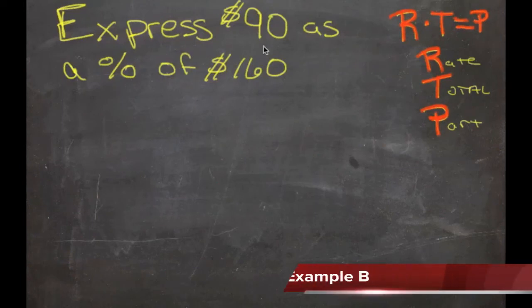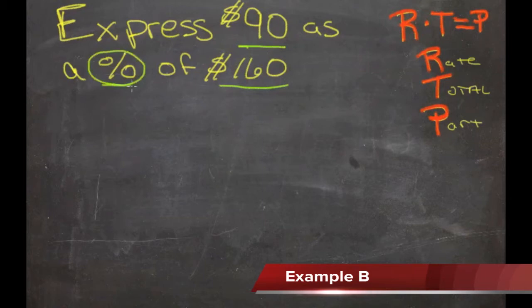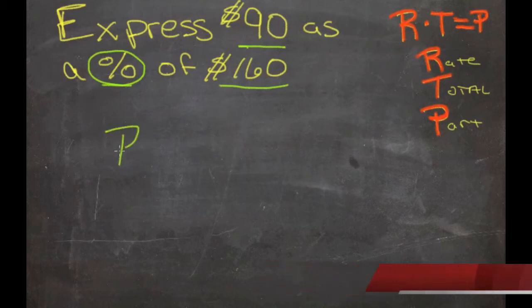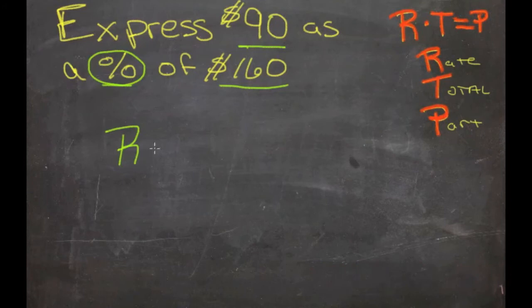Here we're given the question, express $90 as a percentage of $160. So we have the total, 160, and the part, 90. What we don't have is the rate, the percentage. We need to solve for rate. Substituting these values in, we get the rate times the total, 160, equals 90, the part.